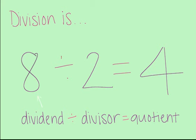The second part is called the divisor. And the answer, which is the third part, is called the quotient.